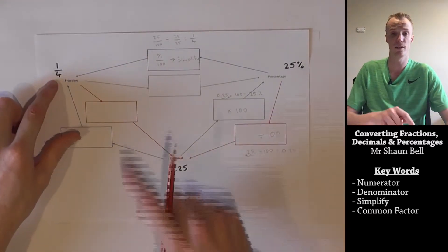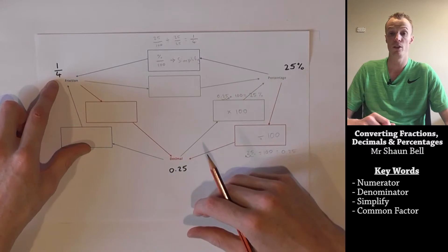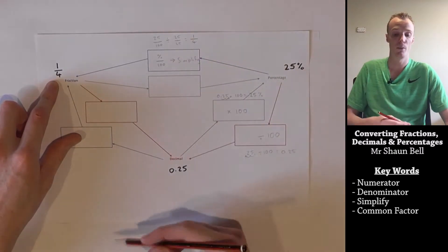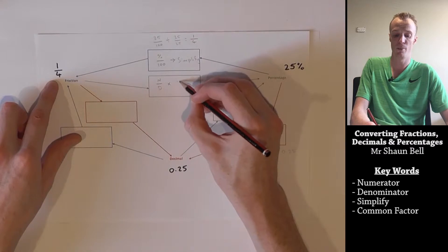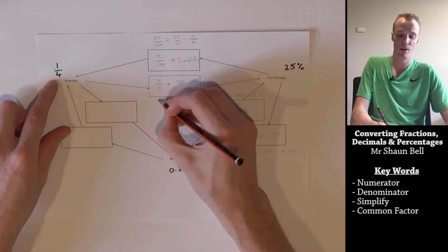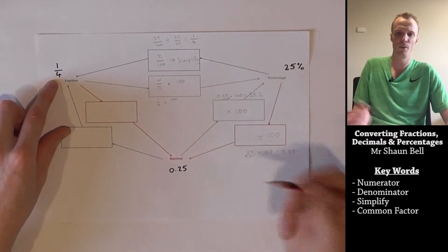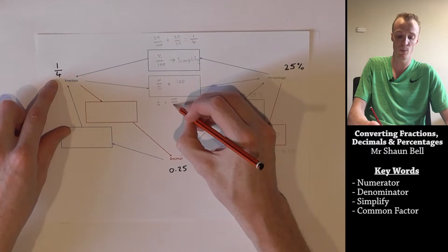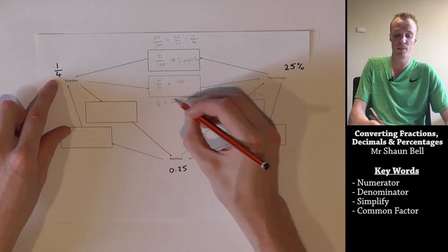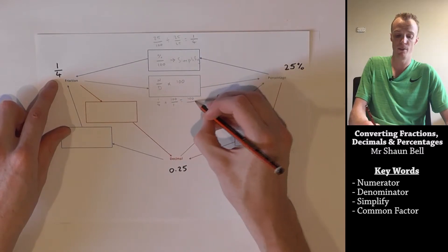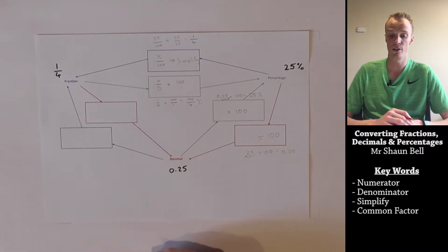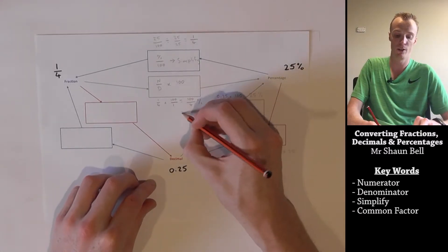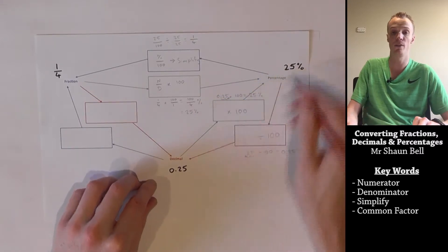Now we've got our fraction — what if we need to go back to a percentage? We do the opposite of what we just did. Last time we divided by 100, so this time we take our fraction, the numerator over the denominator, and multiply by 100. We've got 1 over 4, multiplied by 100 over 1, which means we times the tops together to get 100 and the bottoms to get 4. We always simplify: 100 divided by 4 goes 25 times, so our answer is 25%.